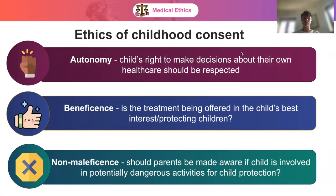In terms of non-maleficence, we should think: should parents be made aware if a child is involved in potentially dangerous activities for child protection? For example, if a 13 year old came to you as a GP asking for contraceptive advice, we need to think about the wider context. This child could be in danger, and if you believe the child is in a relationship that could be abusive or where someone could be taking advantage of them, should something be done to prevent harm? Should this overwhelm patient autonomy in this instance?